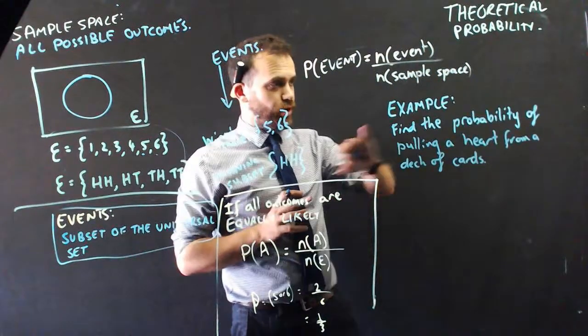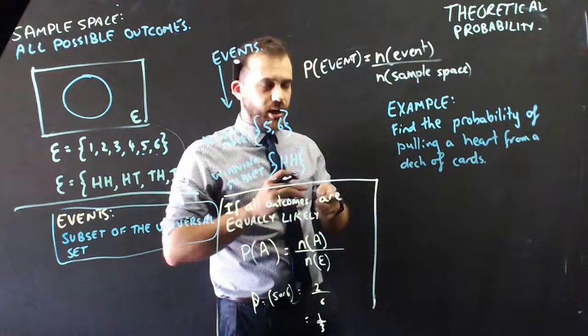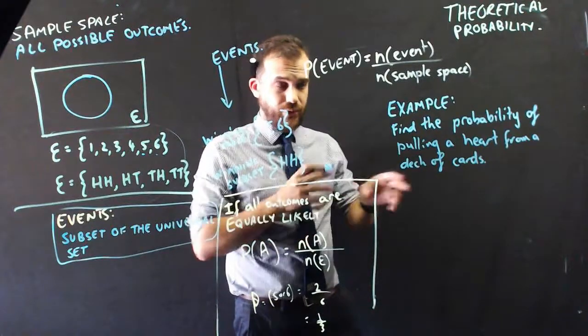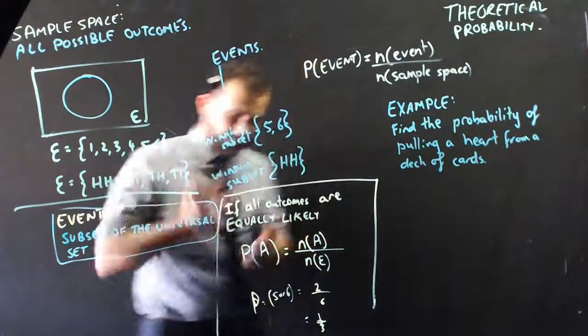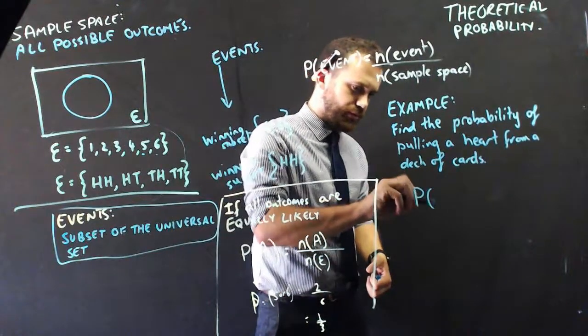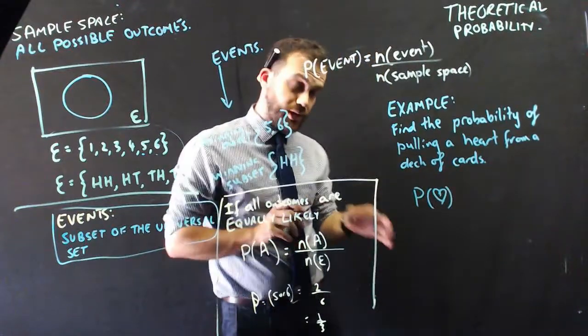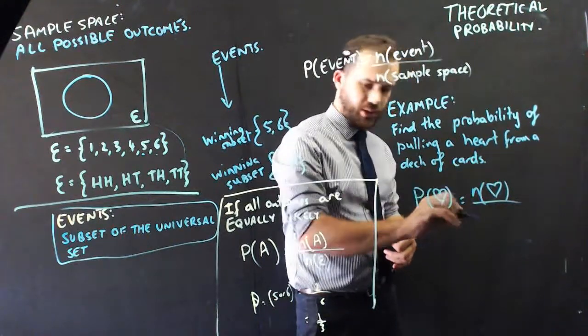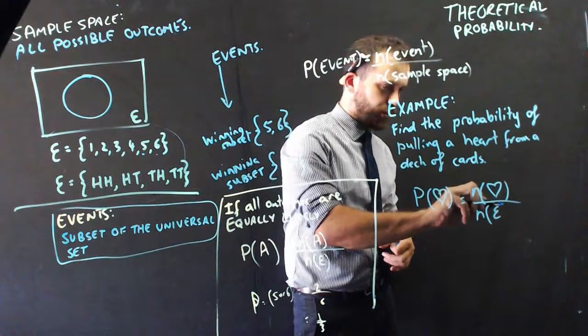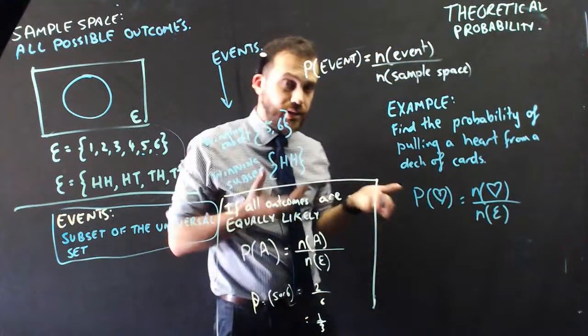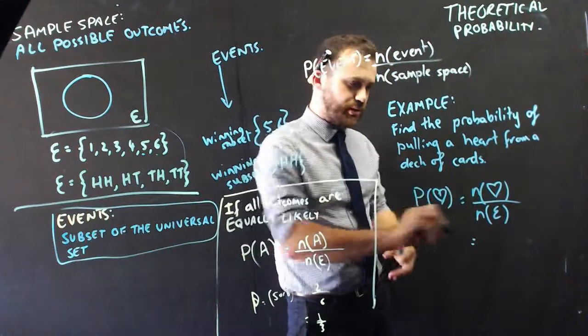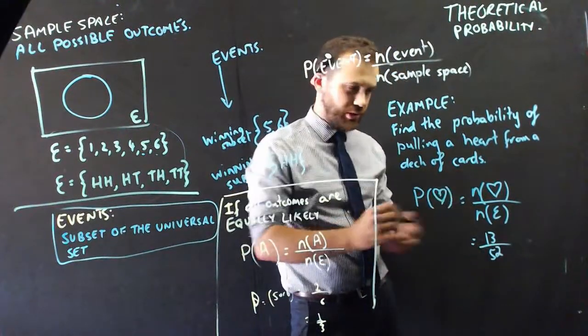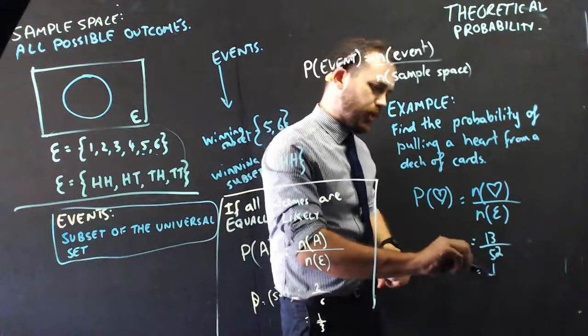So, finishing with a really quick example, find the probability of pulling a heart from a deck of cards. Now, you should know what a deck of cards looks like. You should know how many hearts there are in a deck of cards. If you aren't, you probably need to familiarise yourself with it. Using our formula, the probability of pulling a heart out of a deck of cards is equal to the number of hearts in a deck of cards divided by the size of the sample space. In other words, how many cards there are in a deck. I can tell you that the number of hearts in a deck is 13, and the total number of cards in a deck is 52, if we don't include the jokers, which we're not going to. And that simplifies down to 1 in 4.